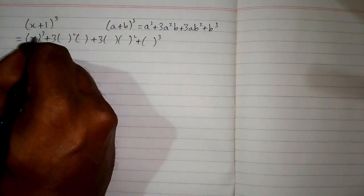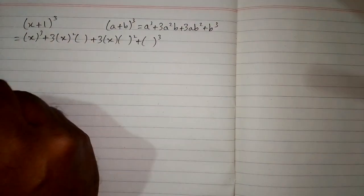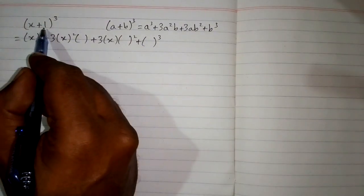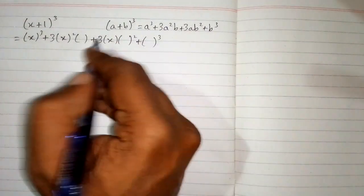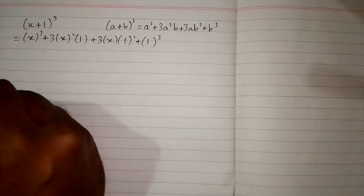First we will write x over here, over here, and over here, and 1 in place of b. So we will write 1 over here, over here, and here.